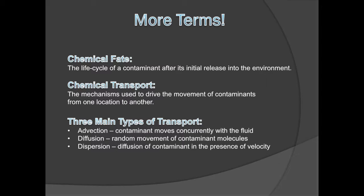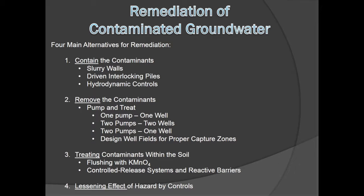When considering chemical contaminants, we look at the chemical fate and transport. Chemical fate describes the life cycle of a contaminant after its initial release into the environment. Chemical transport refers to the mechanisms that drive the movement of contaminants from one location to another. Transport can occur in three ways: advection, diffusion, or dispersion. In the event that groundwater becomes contaminated, there are four options for remediation: containment, removal, treatment, or lessening the effects. Contaminants can be contained using slurry walls, interlocking pipes, or hydrodynamic controls. The removal alternative requires pumping and treating. Contaminants can also be treated in the soil using potassium permanganate.